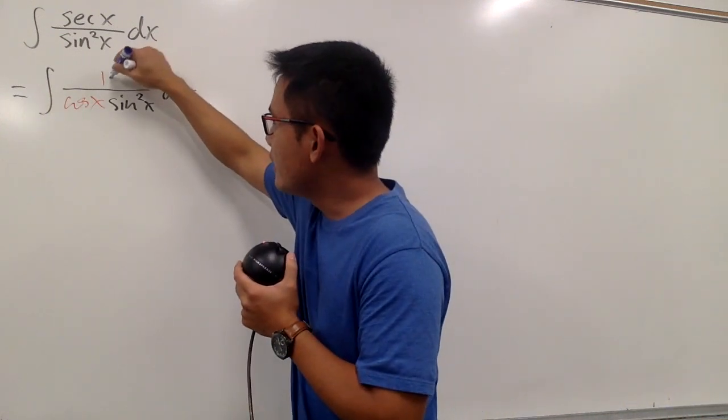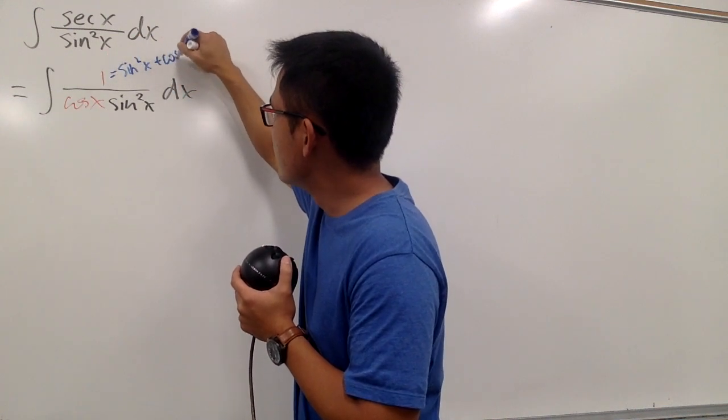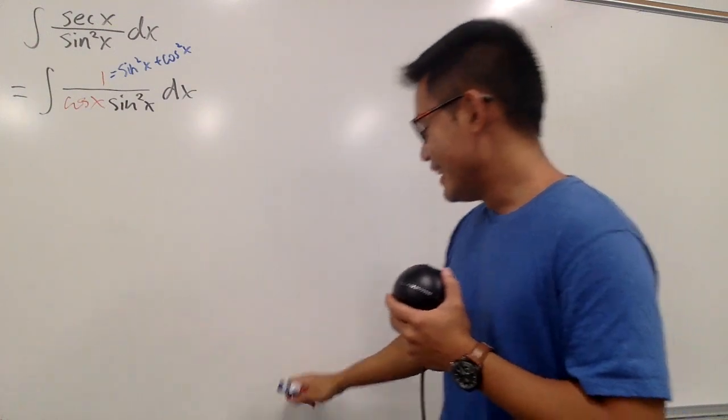So, instead of this 1, I'm going to look at the 1 as sine squared x plus cosine squared x. How's that? Can I do that? Sure, why not, right?